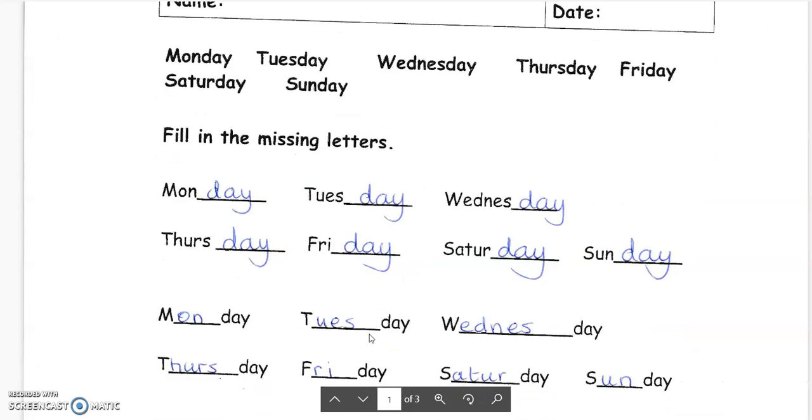The second page was spelling days of the week in English. Monday, Tuesday, Wednesday, Thursday, Friday, Saturday and Sunday. Missing letters here.